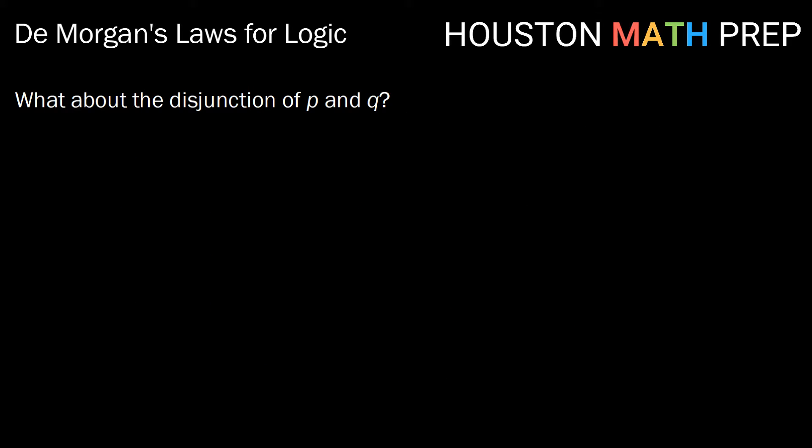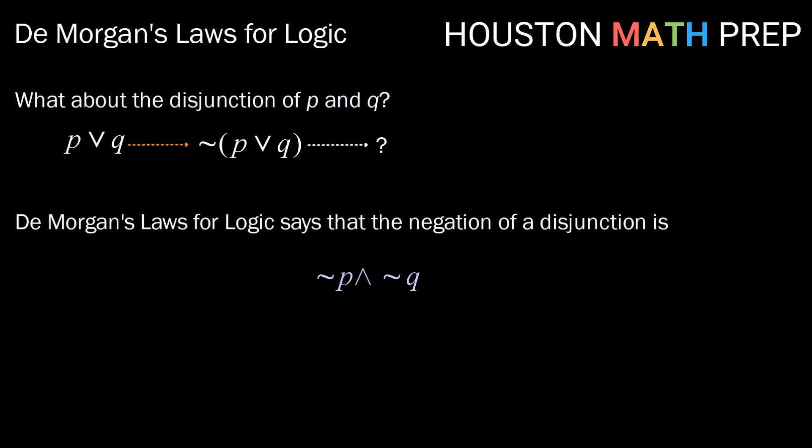What about the disjunction of P and Q? How do we take the negation of P or Q? Well, we can certainly think of that as not P or Q. But what does that look like? Well, DeMorgan's Laws for Logic says that the negation of a disjunction is the conjunction of the negations. So not P and not Q.